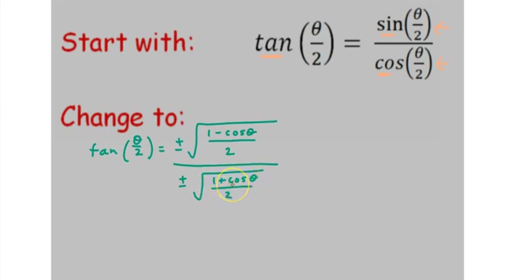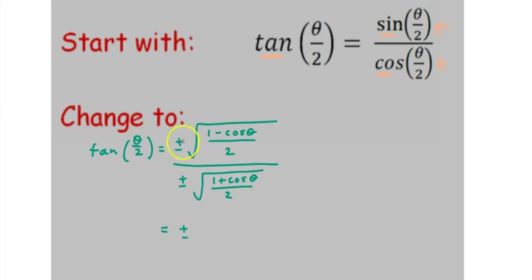If you have plus or minus divided by plus or minus, you really only need a single plus or minus. Because plus divided by plus is plus, plus divided by minus is minus, minus divided by plus is minus, and minus divided by minus is plus.